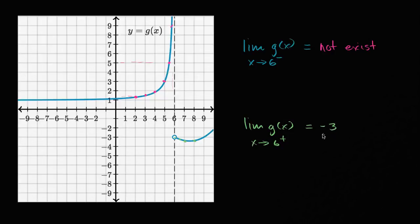at least looking at it graphically, it looks like when we approach six from the right, it looks like the function is approaching negative three, but from the left, it's just unbounded, so we'll say it doesn't exist.